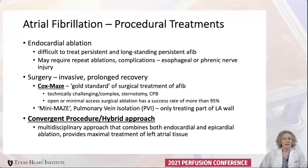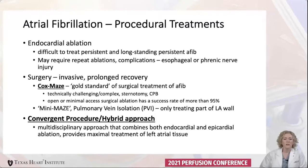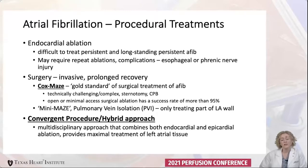Endocardial ablation is done by an EP cardiologist and it is effective, but it's difficult for treating persistent and long-standing persistent AFib. Patients can require repeat ablations, which can lead to complications like esophageal and phrenic nerve injury. Cox-Maze is the gold standard surgical treatment for AFib. It's technically challenging and requires sternotomy and cardiopulmonary bypass.